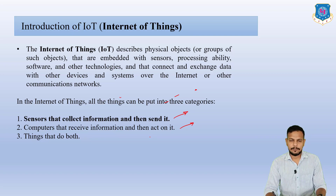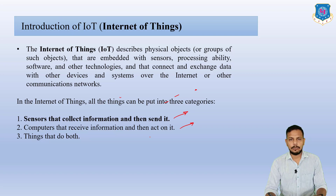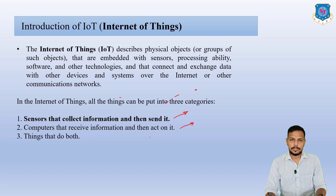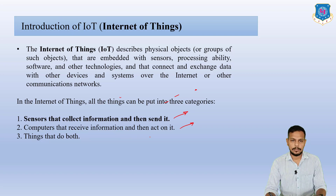To elaborate: sensors collect information and send it — for example, a gas sensor detects various types of gases, collects that information, and sends it to various devices. Computers receive information from the network layer and take action against it. The third category does both number one and number two.